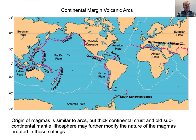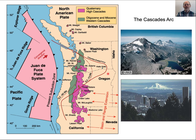There are lots of different subduction zones and different arcs. Some are ocean-ocean subduction zones, while others are ocean-continent subduction zones. Here's an example of the Cascades, close to home — the Juan de Fuca plate is being subducted beneath western North America, giving rise to all of these different mountains along here into southern British Columbia.